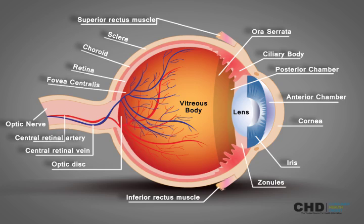The zonule of Zinn is split into two layers: a thin layer which lines the hyaloid fossa, and a thicker layer which is a collection of zonular fibers.